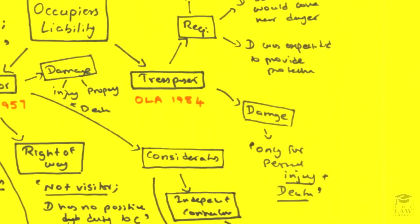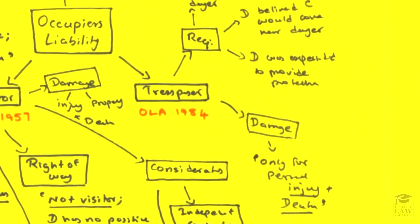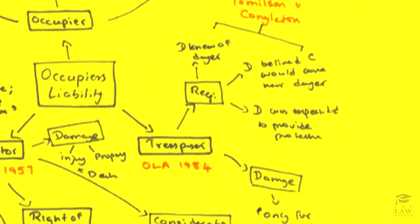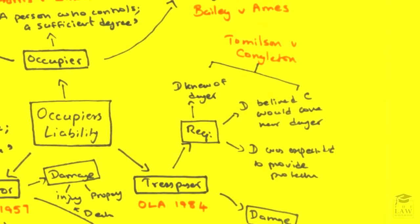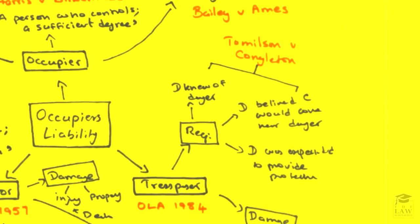How do we determine what sort of liability will be imposed on the defendant occupier in relation to a trespasser? In Tomlinson v Concordia, the requirement for liability to be imposed was threefold. Firstly, the defendant occupier must have known of the danger in some way, shape or form. Secondly, the defendant should have believed that the claimant would come into the danger. And finally, the defendant was expected to provide protection.